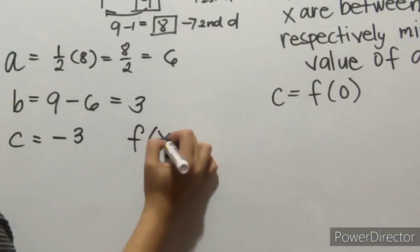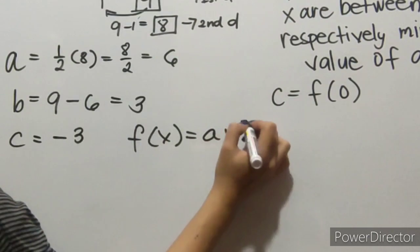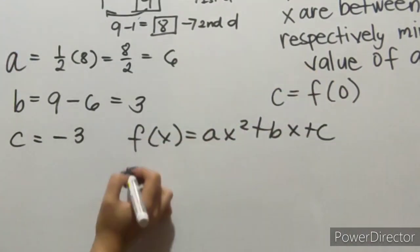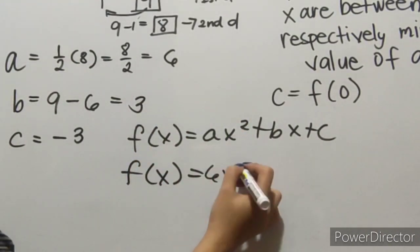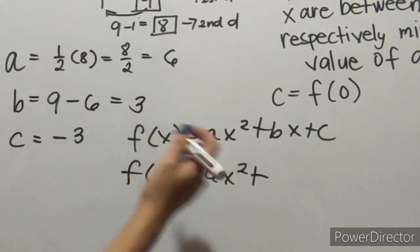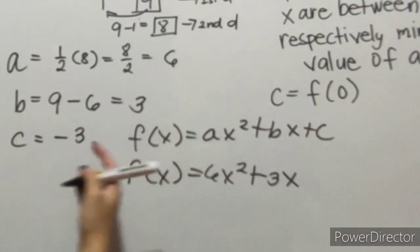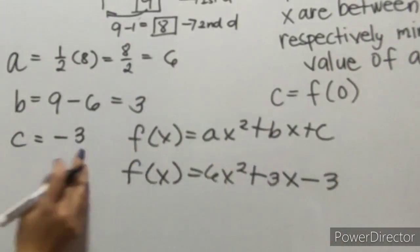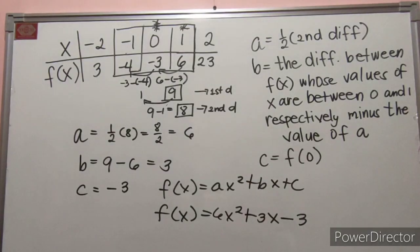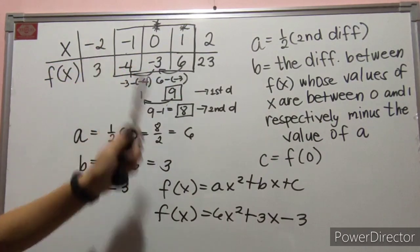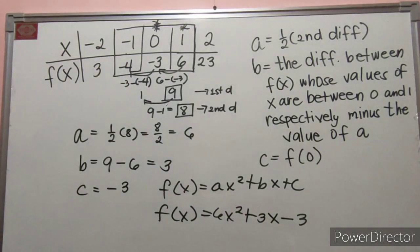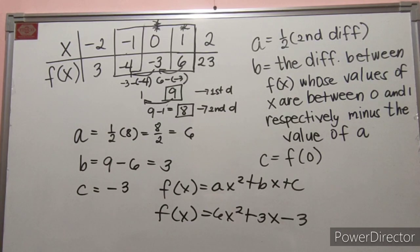Sa substitute na lang natin sa f of x equals Ax squared plus Bx plus C. So, f of x is equals to yung A na nakuha natin na yung 6. So, we have 6x squared plus — nakuha natin yung B is 3 — 3x, and then minus 3, kasi negative 3 ito. Para masure nyo, kahit isubstitute nyo ito sa values ng x, yung magiging sagot ay yung nasa f of x. So, that is how you get or derive the quadratic function given the table of values.